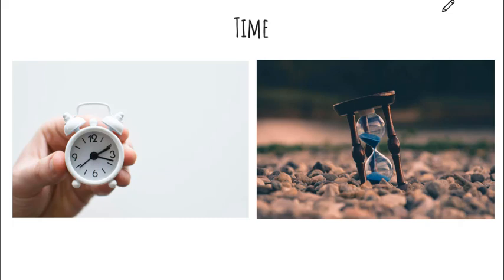Let's first understand time — the amount of time an algorithm or code takes to run fully or execute in order to give the final result. This can be measured mostly in seconds, but we can also keep track of time in hours or minutes as well.